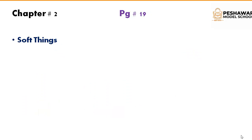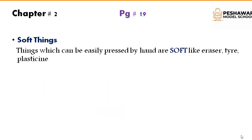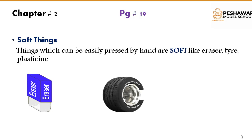Next are soft things. Things which can be easily pressed by hand are soft, like eraser, tire, and plasticine. Those things which can be easily pressed by hand are soft things. For example, we use erasers for doing our work and we can press the eraser with our hands very easily. We can also press the tire with our hands very easily.